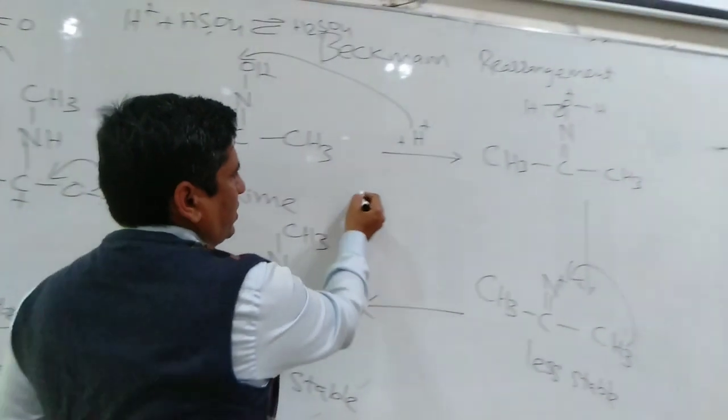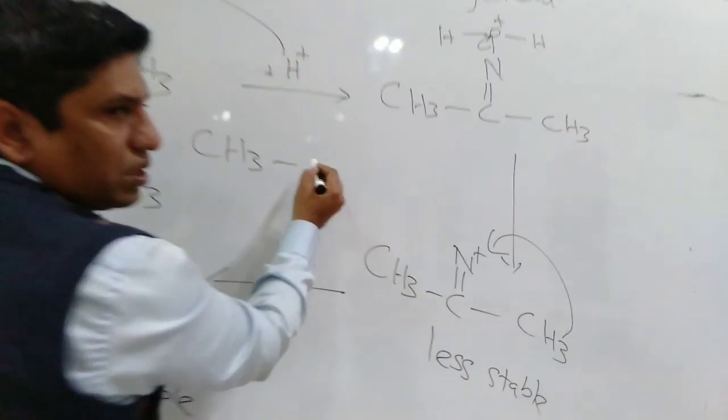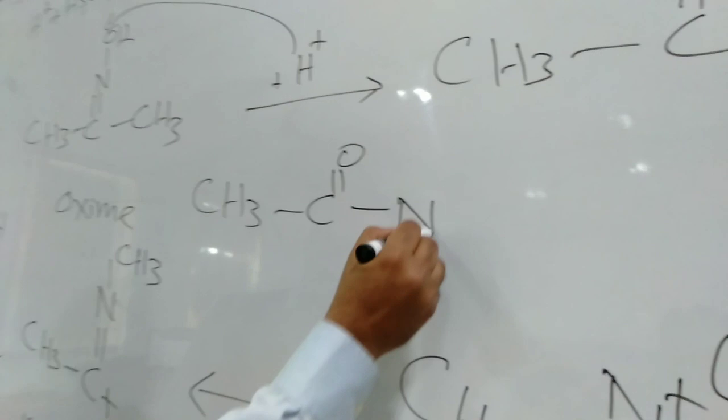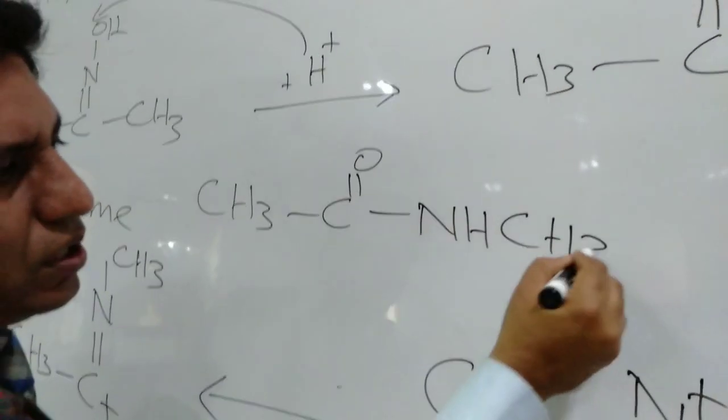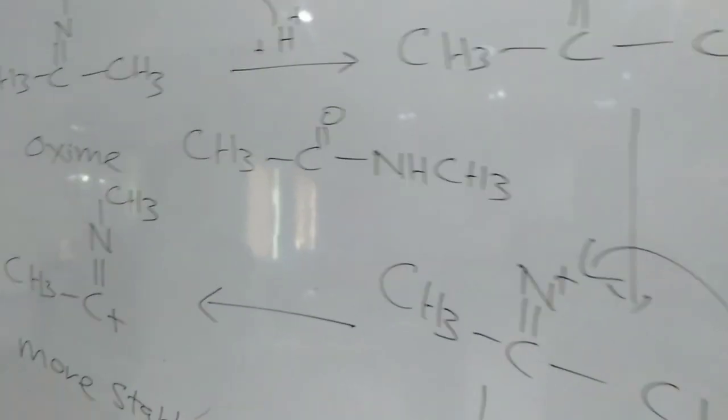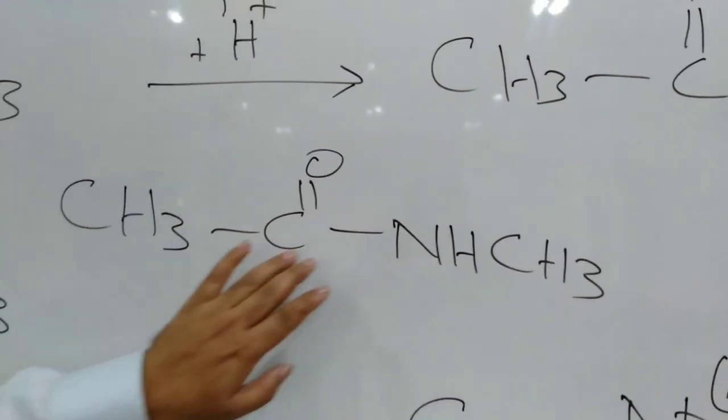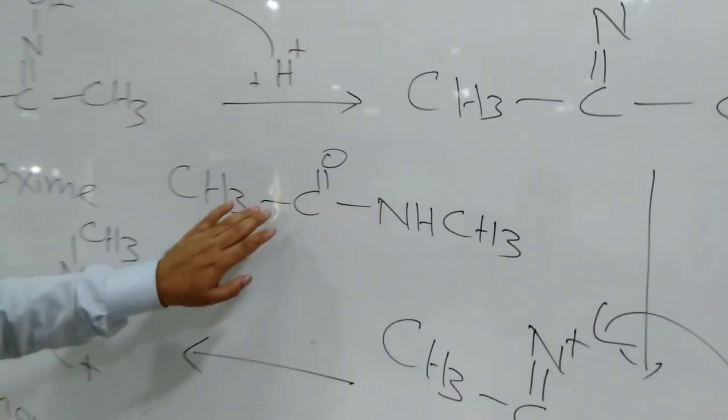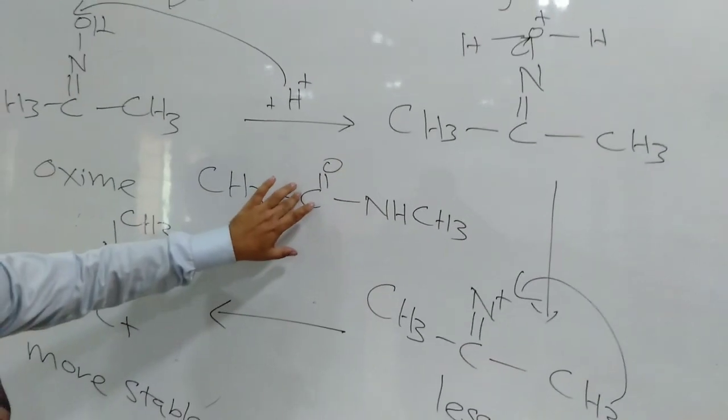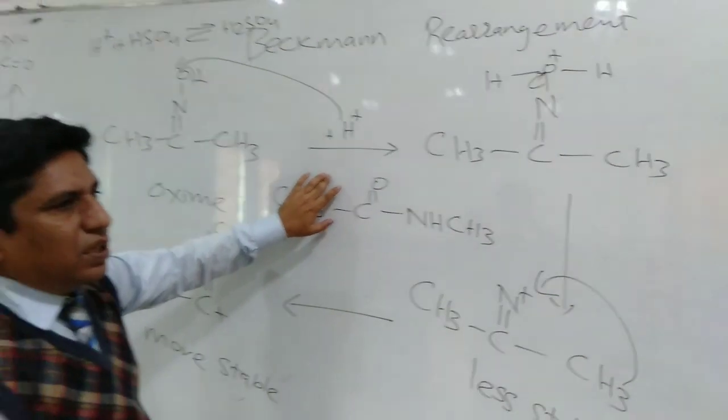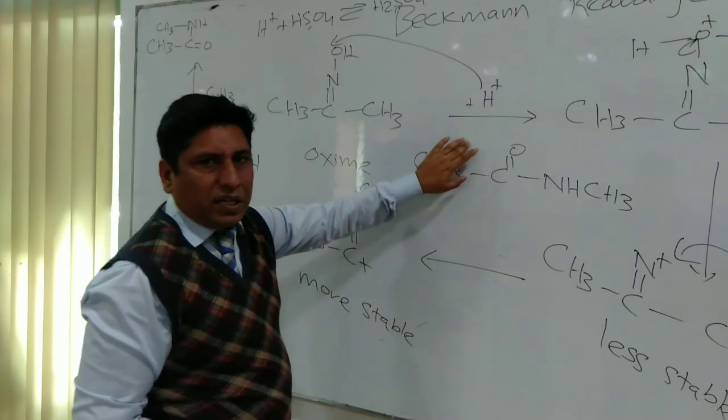I can make it more clear. The actual product which is formed is CH3-C=O-NH-CH3. So from ketoxime, a substituted amide is formed. That is why this rearrangement is called Beckman rearrangement, and this is acid-catalyzed.